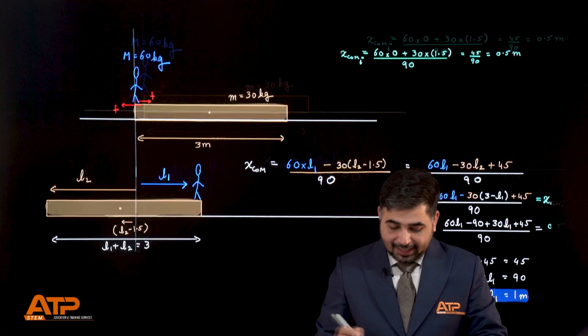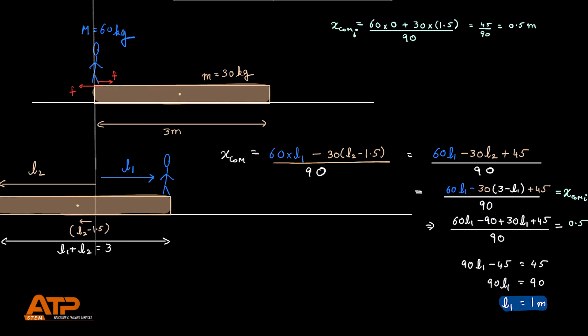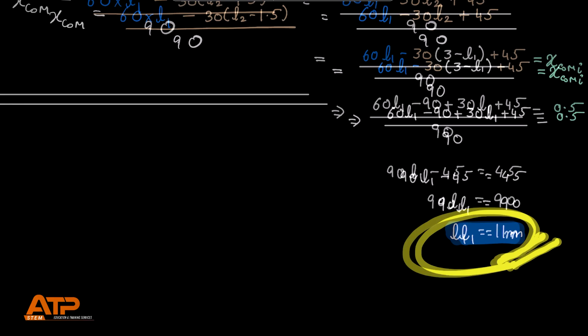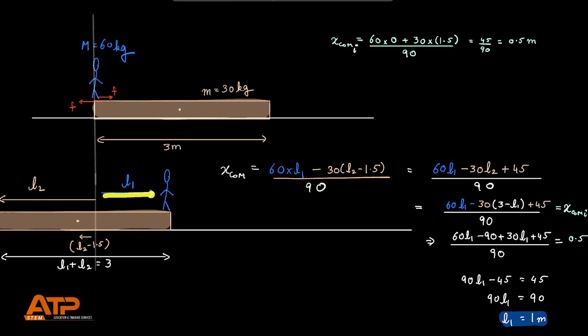If we assume that this new center of mass has the same location as the old center of mass, we equate the two and use this equation, solve both of them simultaneously, we will come up with an answer. L1 equals 1 meter. 1 meter would be the final answer. That means the person actually moved 1 meter to the right and the plank itself moved 2 meters to the left.